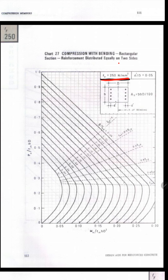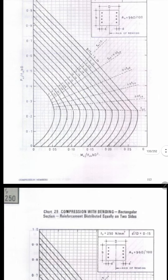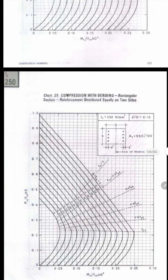You can see three parameters: one is the grade of steel to be used, the d'/d ratio, and reinforcement distributed equally on two sides or four sides. For example, in this chart you can see chart number 27 is for Fe 250 grade and d'/d = 0.05. The next chart is Fe 250 and d'/d = 0.1, with reinforcement equally distributed on two sides. The third chart is Fe 250, d'/d = 0.15.